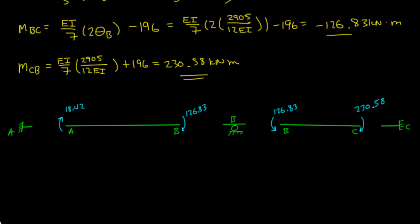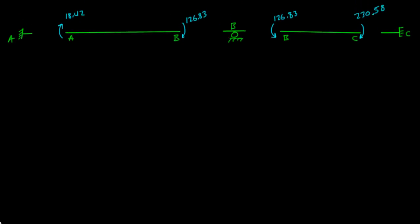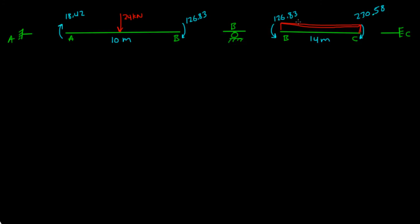Looking at the diagram, on member a-b we have 18.42 and 126.83. Let's not forget the point load applied to a-b — that was 24 kilonewtons. This member was 10 meters, and then 14 meters. At member b-c there was a distributed load of 12 kilonewtons per meter.